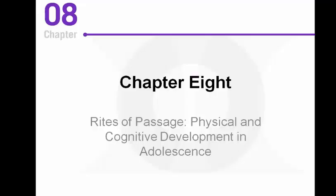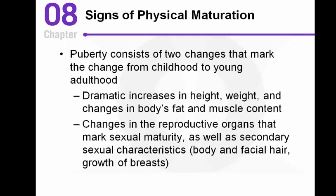Today we're going to be starting off with Chapter 8, which is going to be about physical and cognitive development in adolescence. We're also going to start the slides on social development in adolescence as well. We've moved into a different stage of life now — we've gotten out of childhood and into adolescence. There's not necessarily a specific age range associated with adolescence.